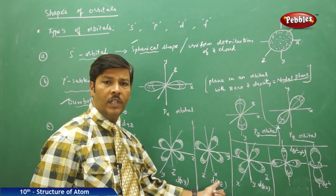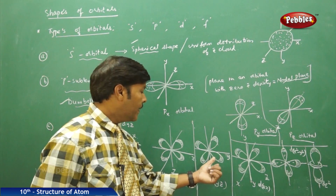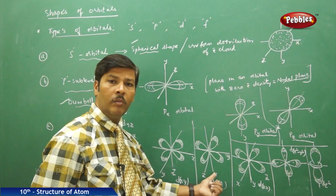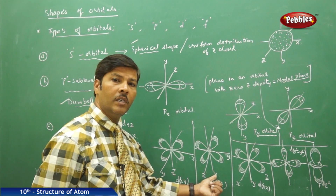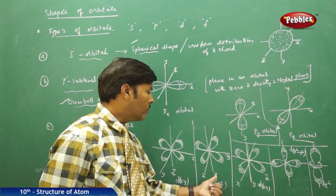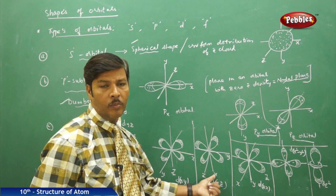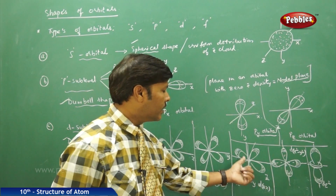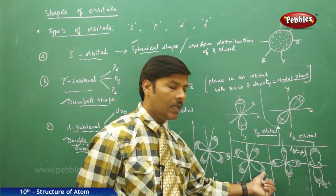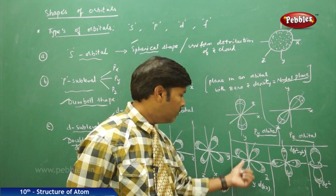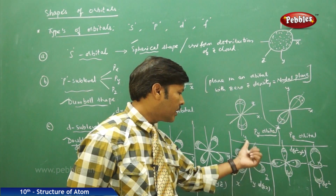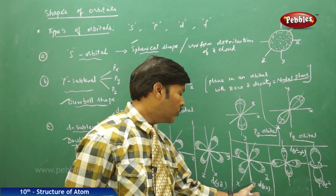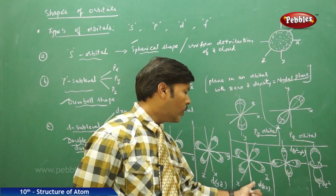For the dyz orbital, also a double dumbbell, the electron density is across the y-axis and z-axis. The nodal planes are the zx and xy planes. For the dzx orbital, the electron density is across the z-axis and x-axis, and the nodal planes where electron density is zero are the xy and yz planes.